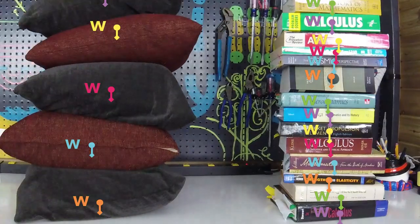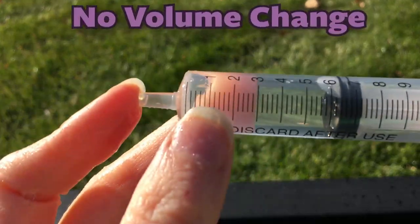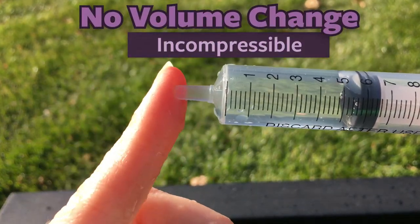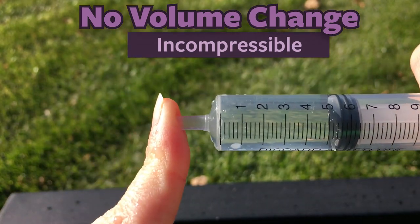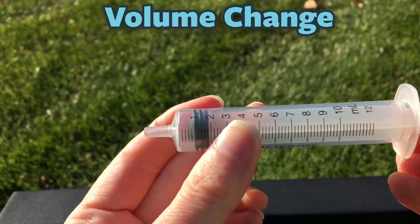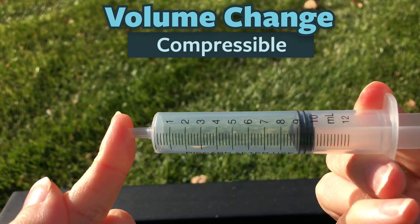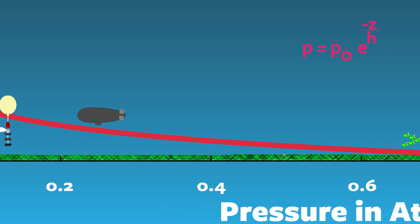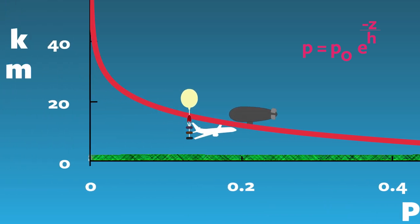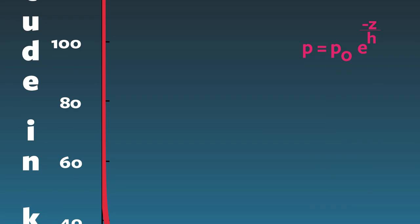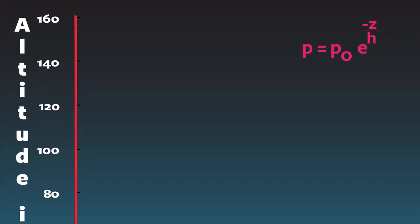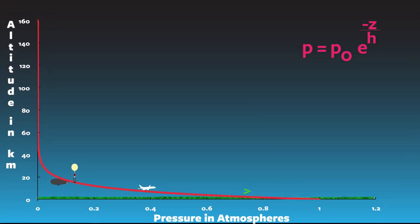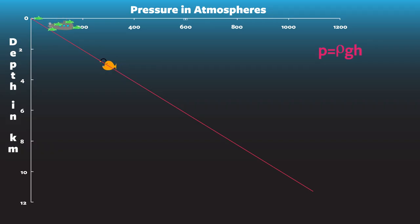The bottom pillow will compress under the weight of everything above it. We can also show this with a syringe — we can add more pressure to a syringe full of water and the volume is not going to change. But the volume of a syringe full of air will change as we increase the pressure, because air is compressible. The pressure change of air over altitude is a logarithmic change, and the crushing of air means that density is changing as we go through the atmosphere, while the pressure change of water over depth is a linear one and its density remains the same.